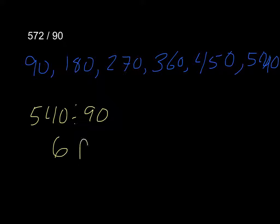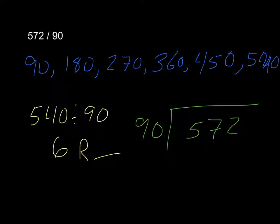Once again, we have a remainder. What I'd like you to do here is write it out. 572 divided by 90. We're going to do our 6, which we know is 540. 2 minus 0 is 2. 70 minus 40 is 30. And 500 minus 500 is 0.